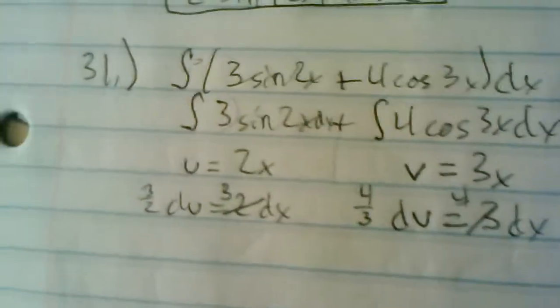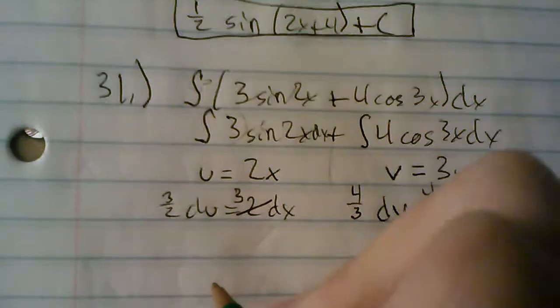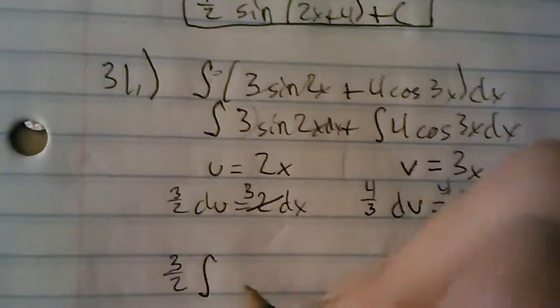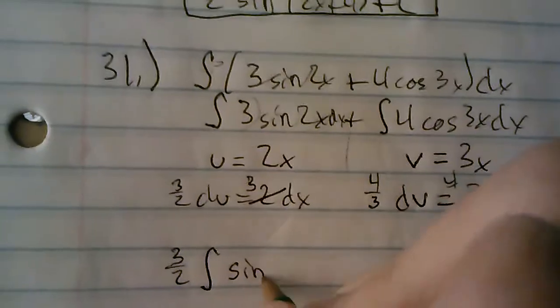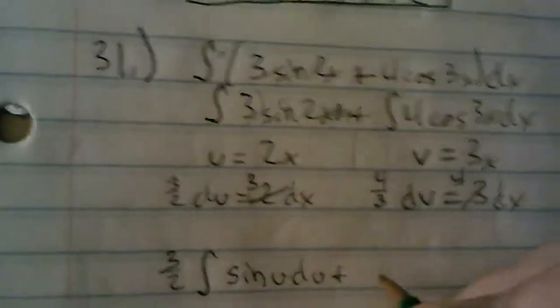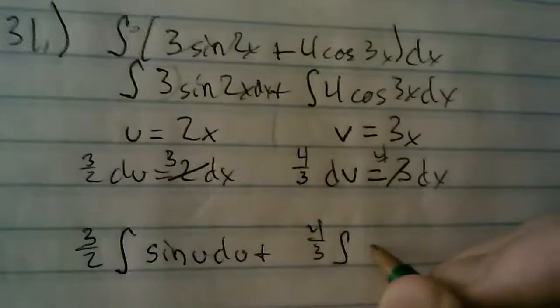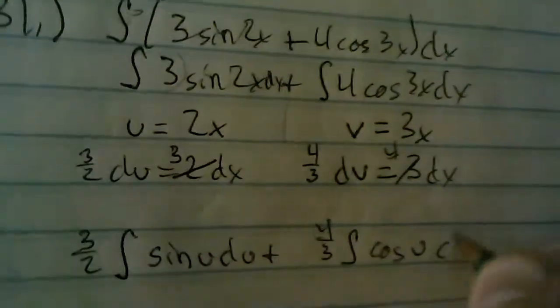Yeah, four. Okay. So, now that we have this, three halves floats out to the front. So, it's three halves integral of sine of u du plus four thirds the integral of cosine of v dv.